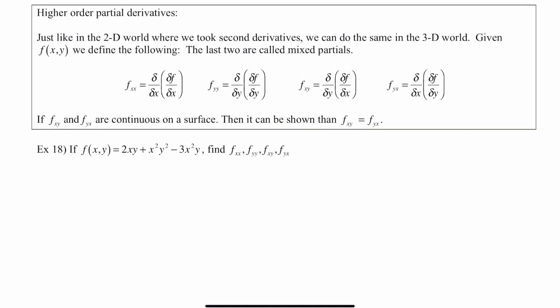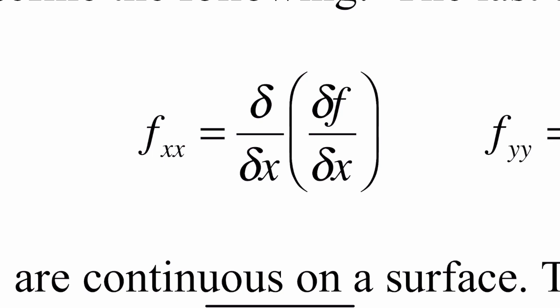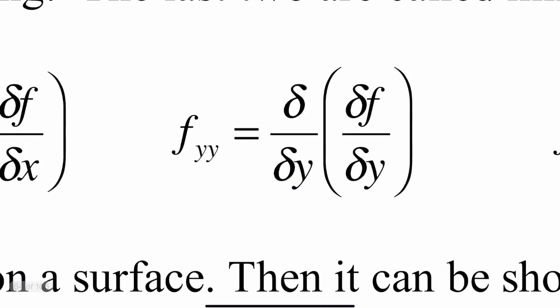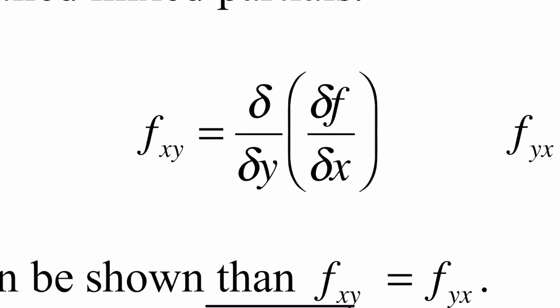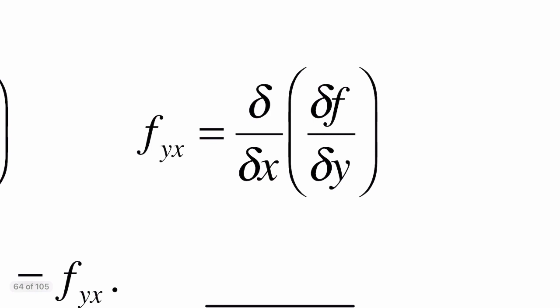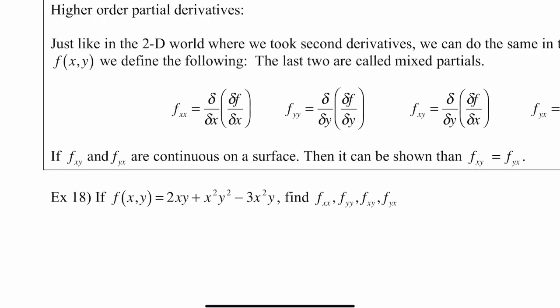The last new thing you're going to learn in this module is higher order partial derivatives. The notation: if you take the derivative of f with respect to x twice, that would be fxx; if you took the derivative of f with respect to y twice, that would be fyy. For fxy, take the derivative of f with respect to x first, then take the derivative of fx with respect to y. For fyx, take the derivative of f with respect to y first, then take the derivative of fy with respect to x. It can actually be shown that if fxy and fyx are continuous on a surface, then fxy equals fyx.